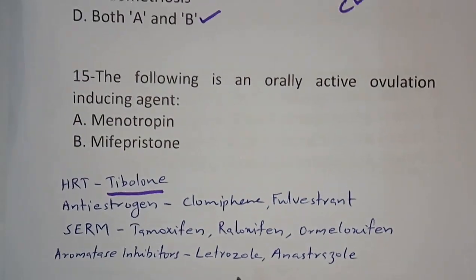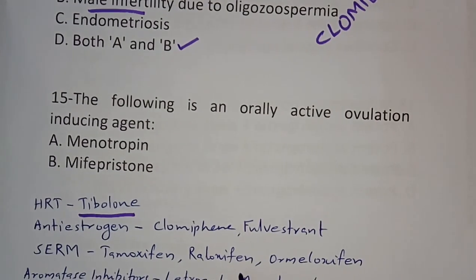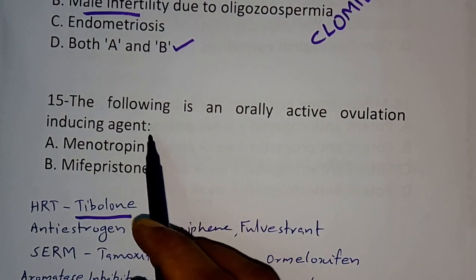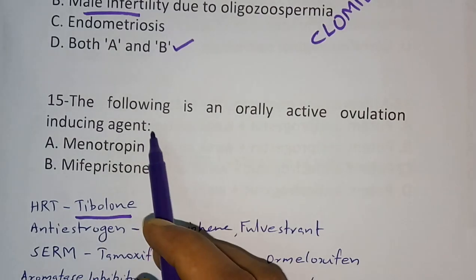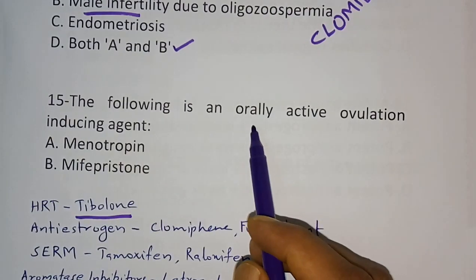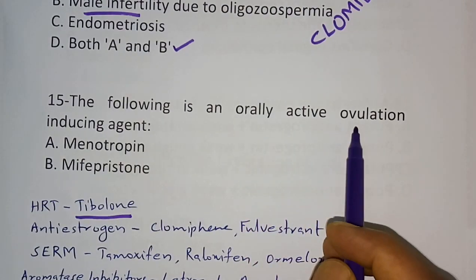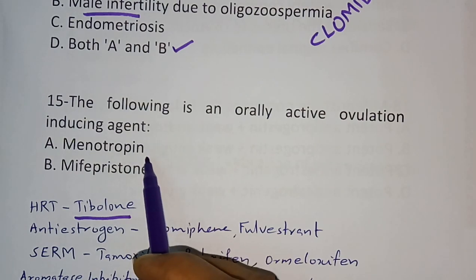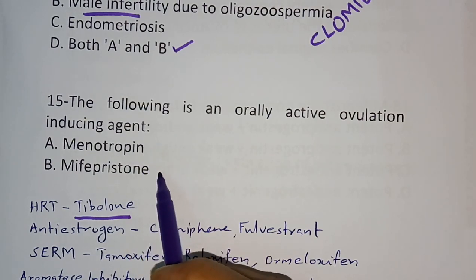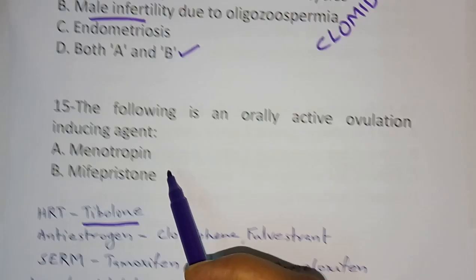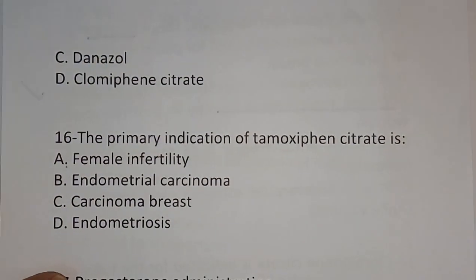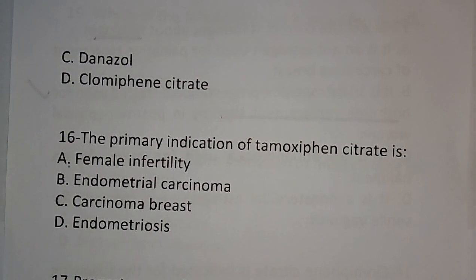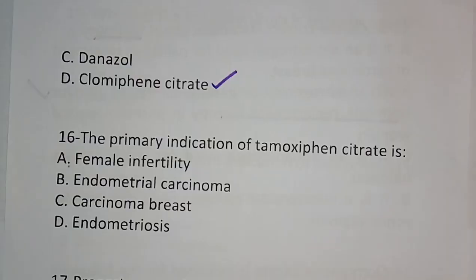Question number 15: The following is an orally active ovulation inducing agent. Options are menotropin, mifepristone, danazol, and clomiphene citrate. The correct answer is clomiphene citrate.